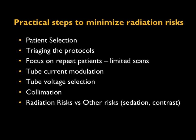There are a number of practical steps to minimize radiation risks. First is patient selection—selecting the right patient for the right type of study is very critical. Second is triaging the protocol: selecting the right protocol for the right study and ensuring it is suited for the child's size, including selecting the right tube voltage, tube current, and so forth.